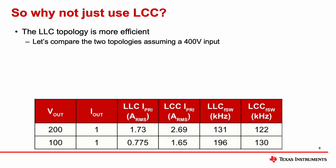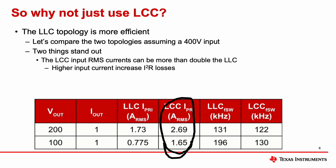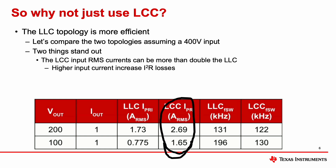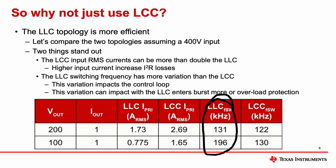So why not just stick with an LCC topology? Well, first and foremost, the LLC topology is actually much more efficient. Comparing the two topologies assuming the same 400 volt input voltage, two things stand out: the LCC input RMS currents can be more than double the LLC topology, and this higher input current increases the I²R losses.